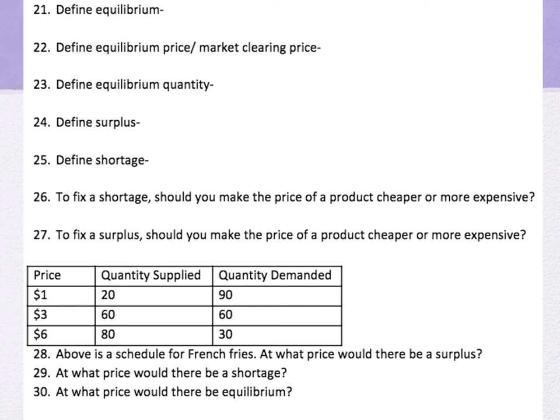Number 26: to fix a shortage, should you make the price cheaper or more expensive? A shortage means people are buying it too easily and quickly, so you raise the price — they're probably willing to pay more. Number 27: to fix a surplus, you make the price cheaper because people aren't buying it. Keep lowering the price and more people will buy. You want that sweet spot — the market clearing price where product is going in and out.